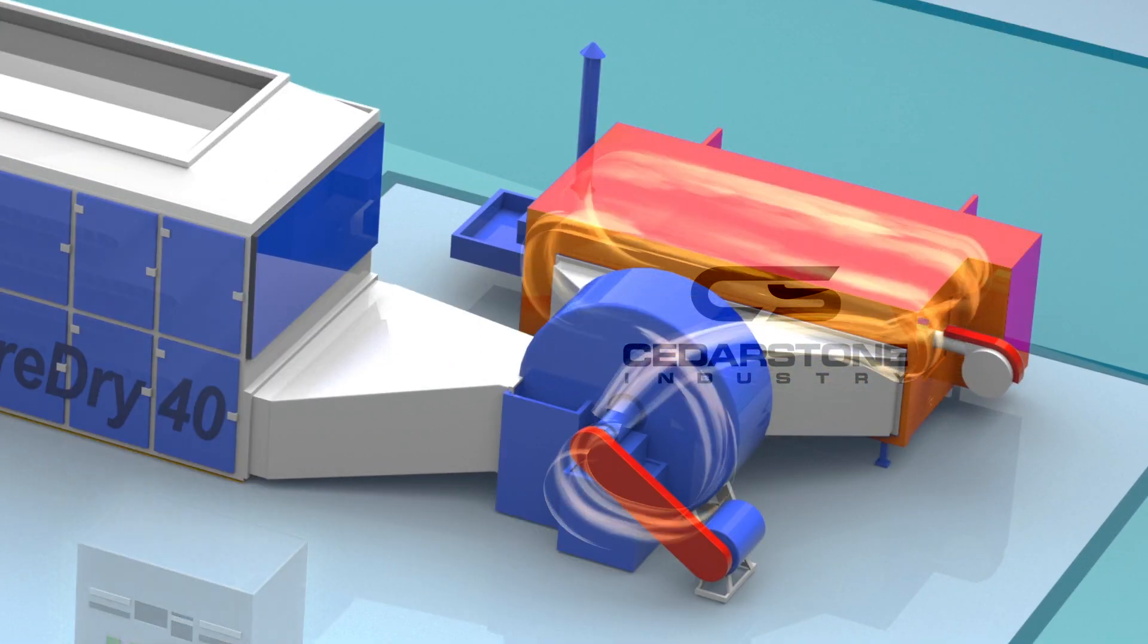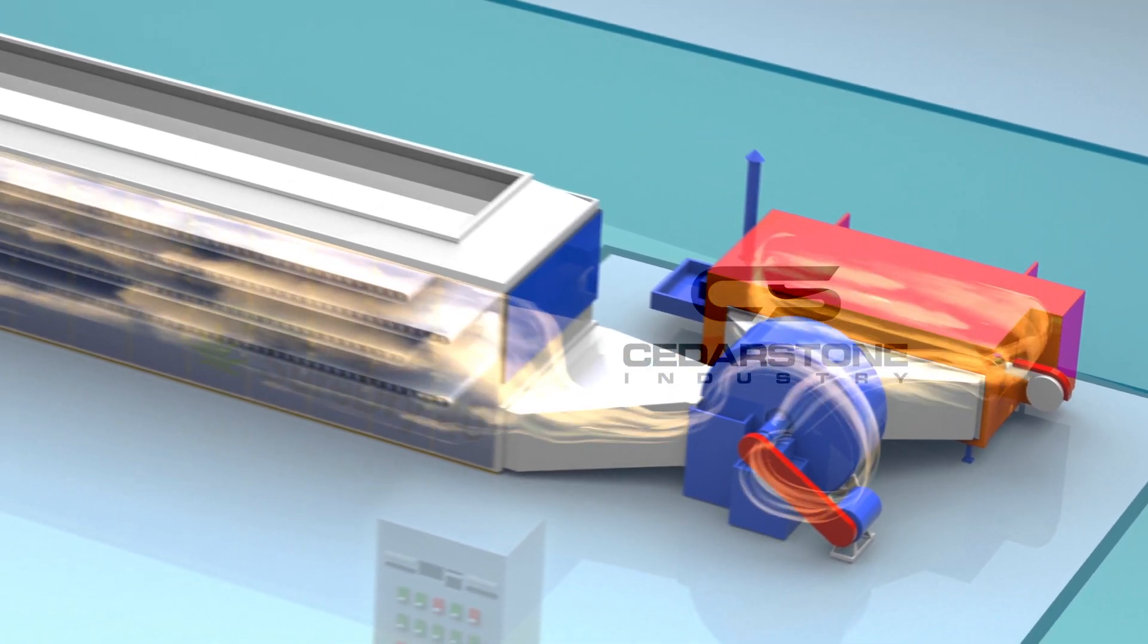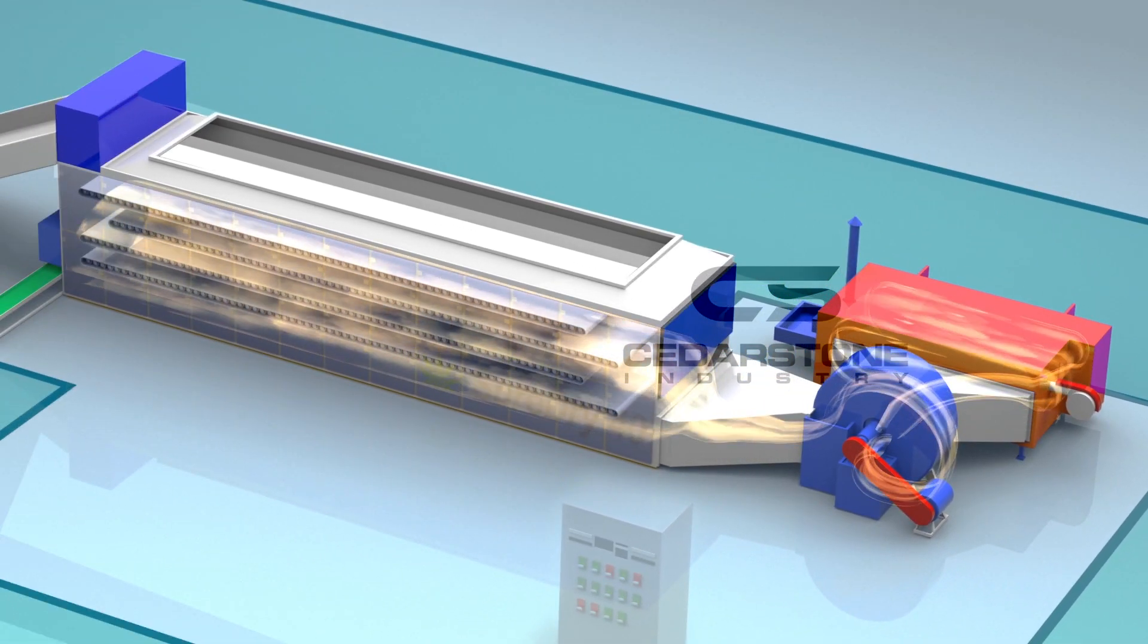The system can utilize natural gas, propane, or a diesel burner for the heat source and will provide a constant warm airflow for drying.